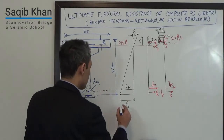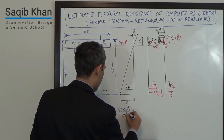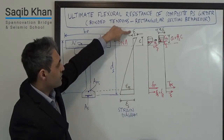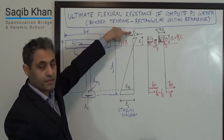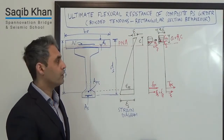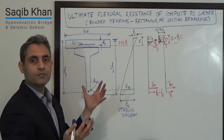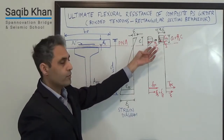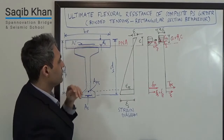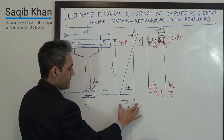Let's look at the strain diagram for the cross-section. Our basic assumption is that the ultimate capacity is reached when the concrete reaches its ultimate compressive strain — different codes give different values, but they vary somewhere between 0.003 to 0.0035. The red line denotes the plastic neutral axis — that is when everything is cracked and things have reached the ultimate limit state. The neutral axis starts somewhere and then progressively moves up to maintain equilibrium. The depth of the neutral axis is C. The strain in the rebar at the bottom is epsilon S, and the strain in the pre-stressing strands is epsilon PS.